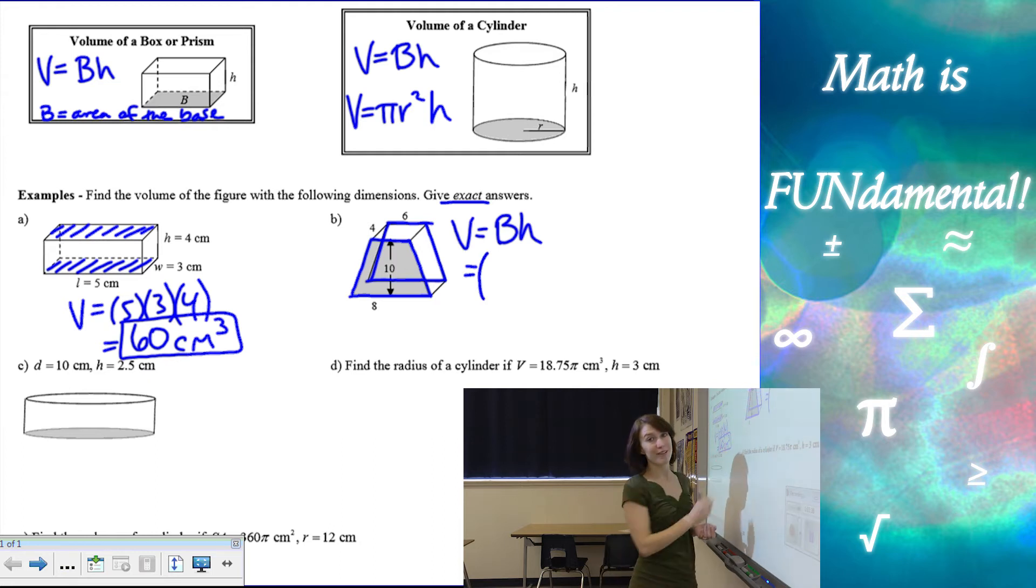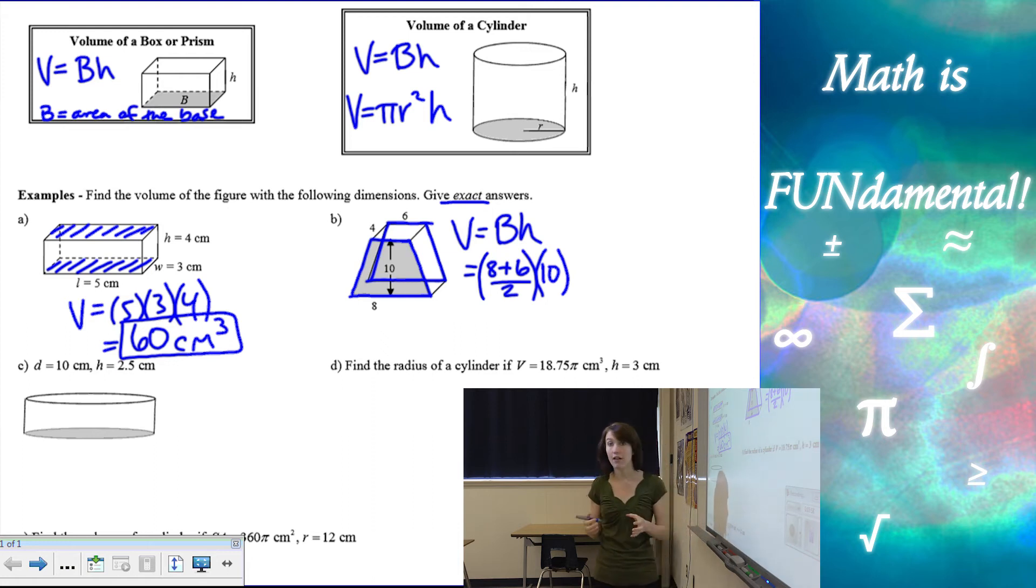So when we want to find area of the base, we need to think about area of a trapezoid. And if you don't remember that formula, you can always go look back at one of my previous lessons. So area of our trapezoid is going to be base one, which in this case is eight, plus base two, which is six, divided by two. So average the two bases times the height of the trapezoid, which is 10. That's going to give us the area of our base.